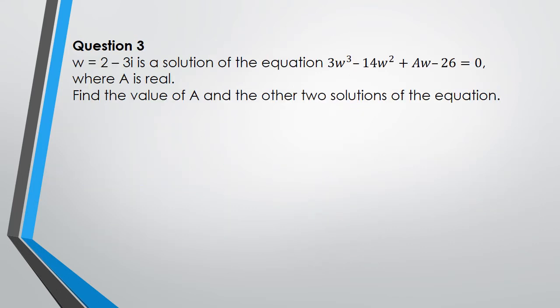Question 3 is very similar to question 1 — you can use the same strategies — but I'm going to show a slightly different method. We know the first solution is 2 - 3i, which means we can write the first factor of the equation as (w - (2 - 3i)).